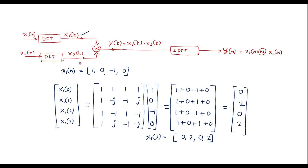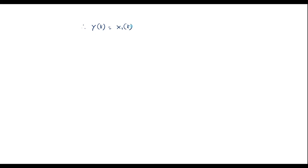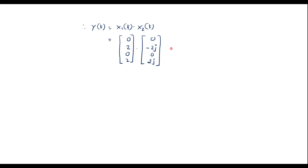As per the block diagram, y(k) = X1(k) · X2(k), i.e., element-wise multiplication. X1(k) = {0, 2, 0, 2} and X2(k) = {0, -2j, 0, 2j}. Multiplying element-wise: 0·0 = 0, 2·(-2j) = -4j, 0·0 = 0, 2·(2j) = 4j. Therefore y(k) = {0, -4j, 0, 4j}.